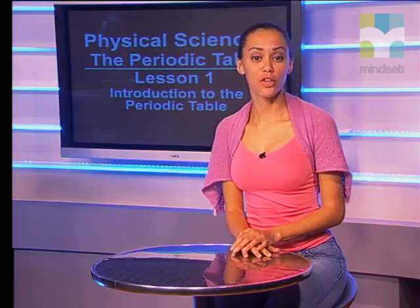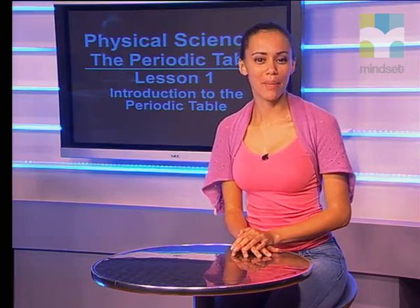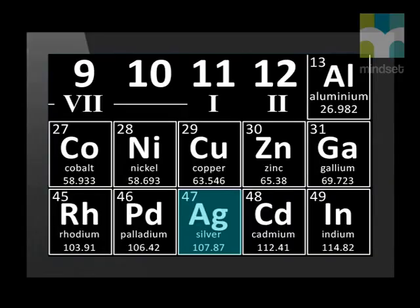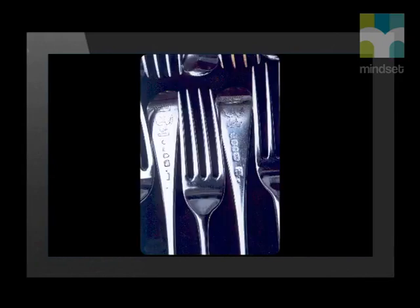Now that we have discussed the first 36 elements of the periodic table, we need to learn about just a few more very useful elements. The first of these is silver, represented by the symbol capital A, lowercase g, from the Greek word arguros. It has atomic number 47 and is found under copper in the periodic table. Silver is a precious metal because of its high value — it was used to make money, jewellery, and expensive cutlery.